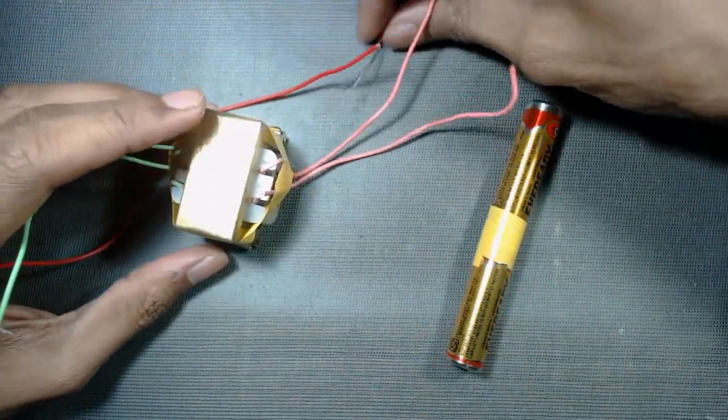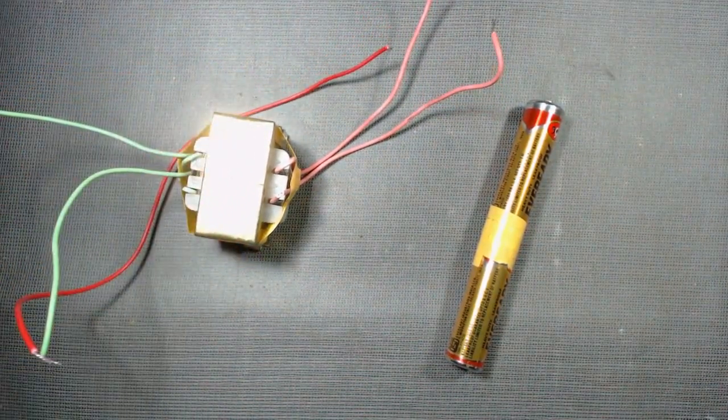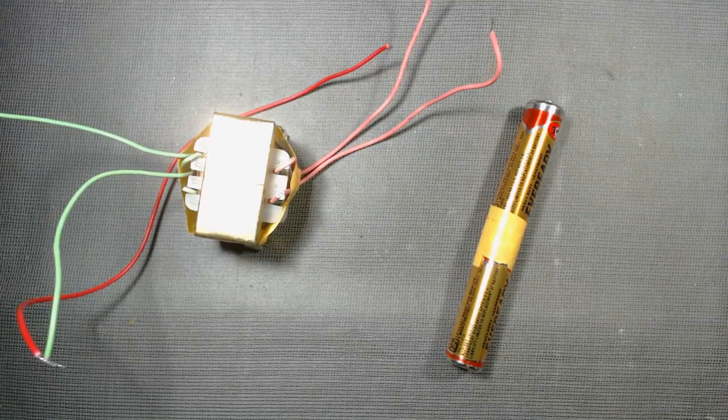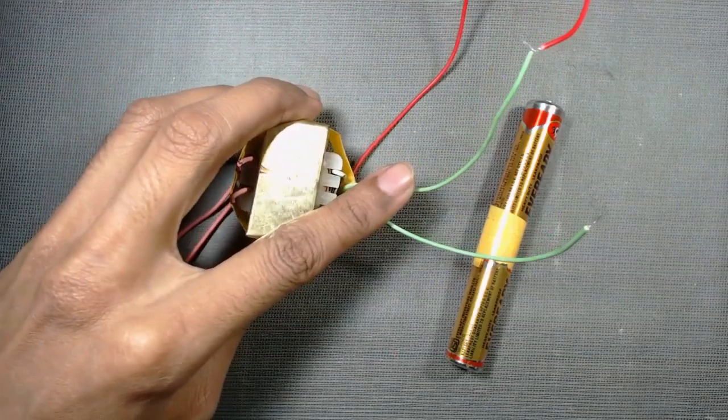This is because in a step down transformer, the primary side has more number of turns in each coil. And the secondary side has less number of turns in each coil.